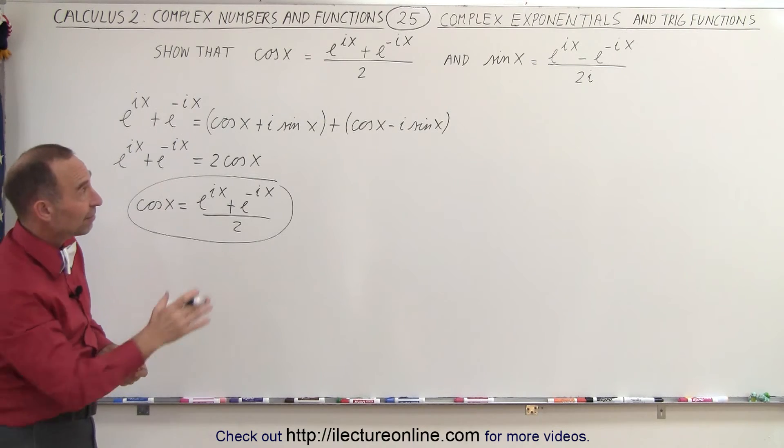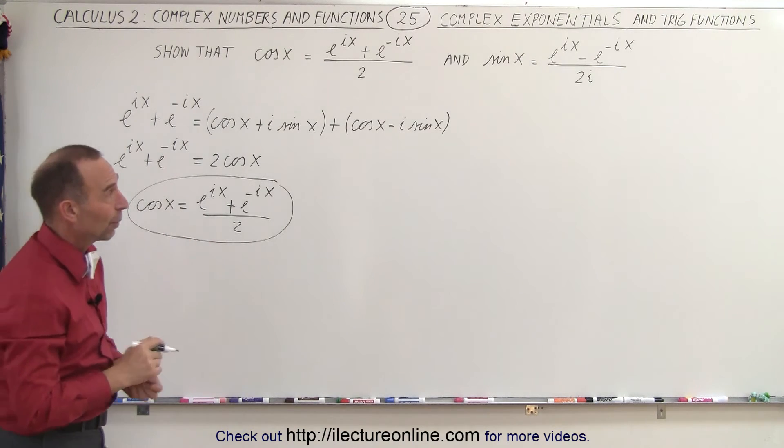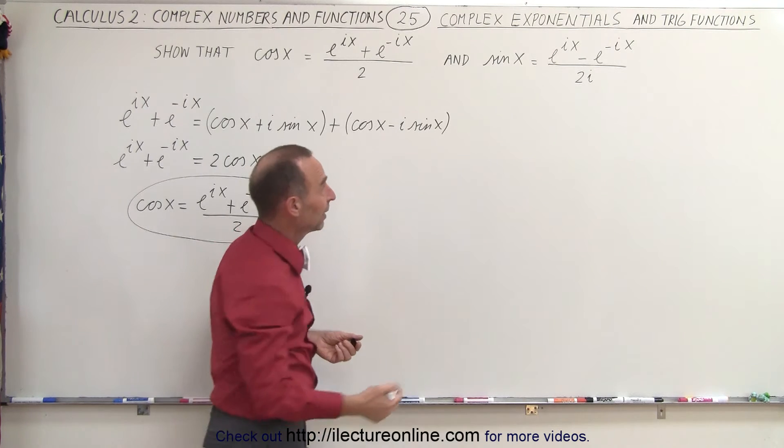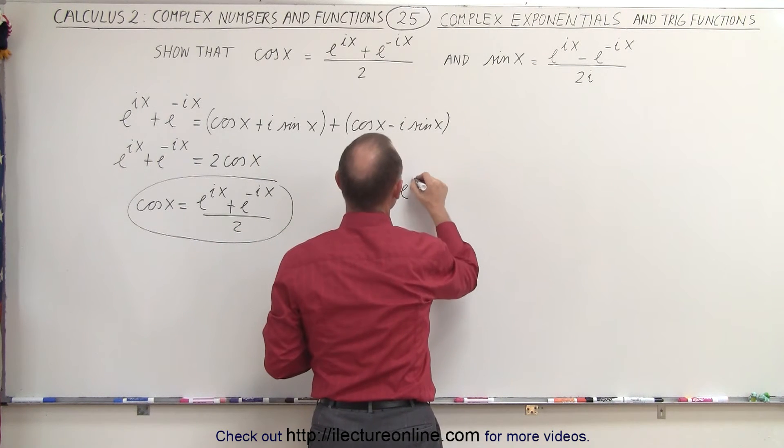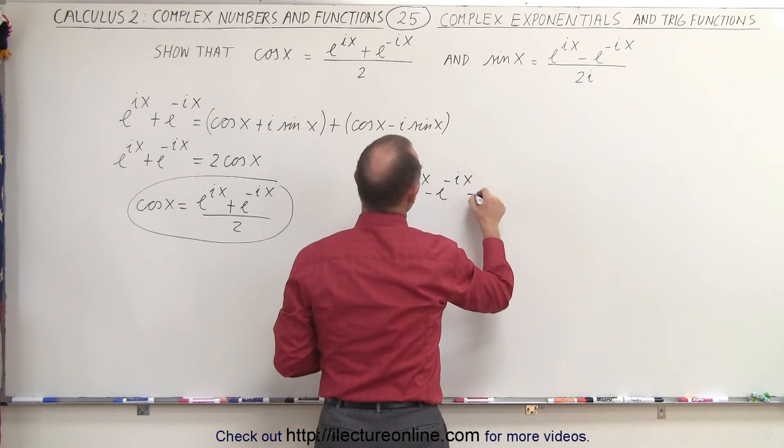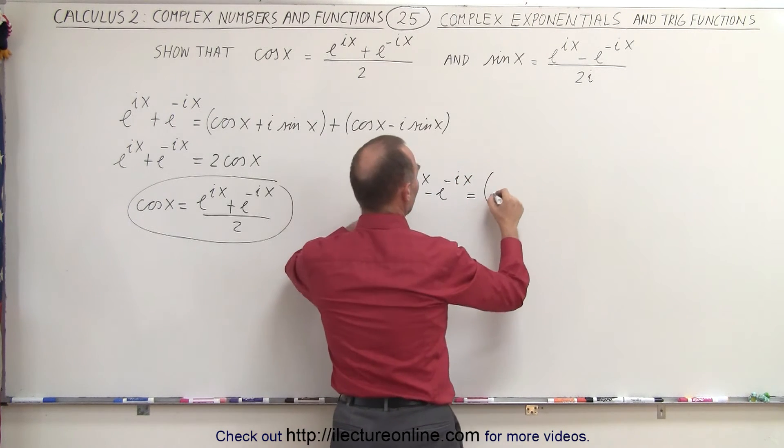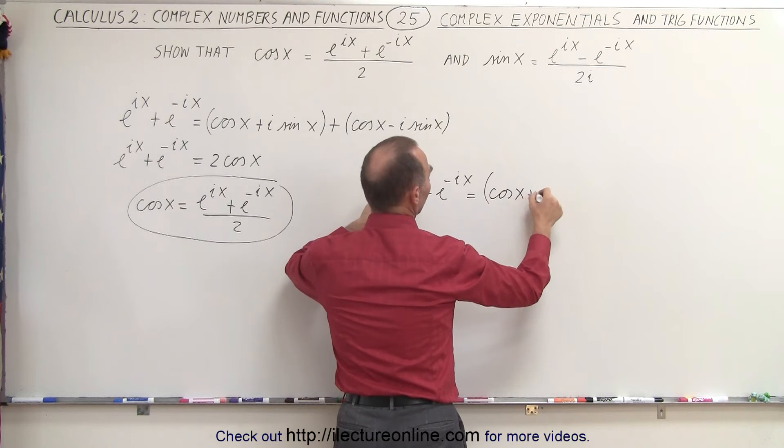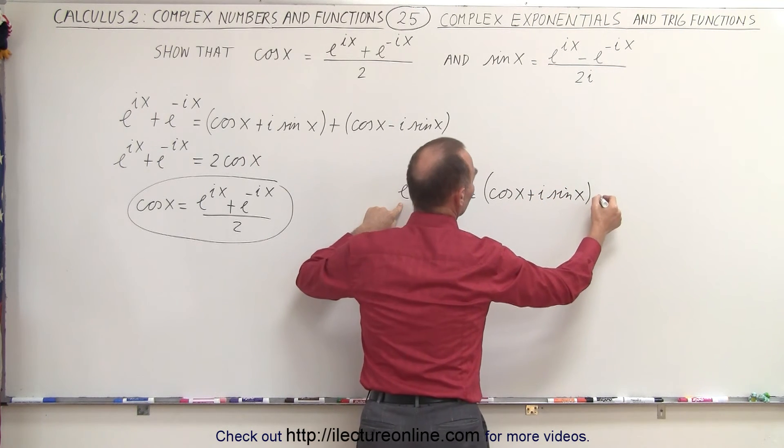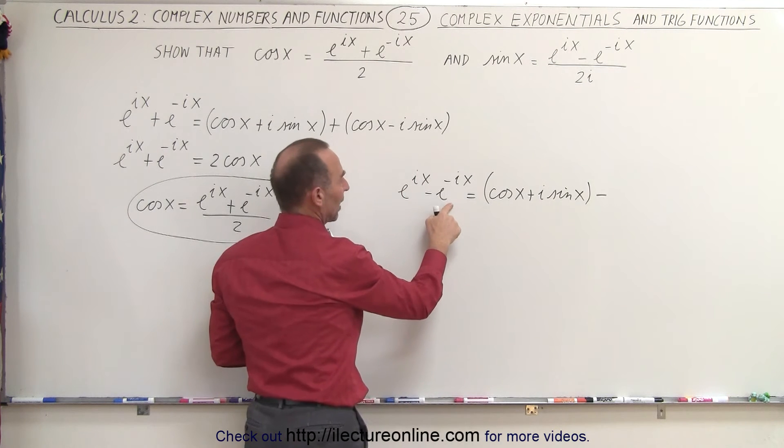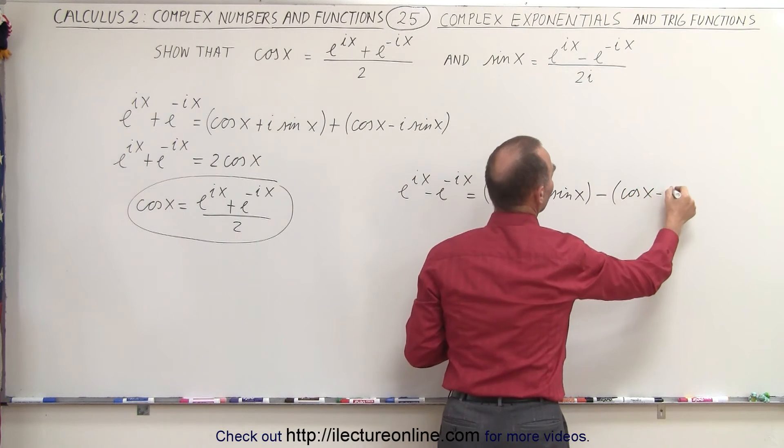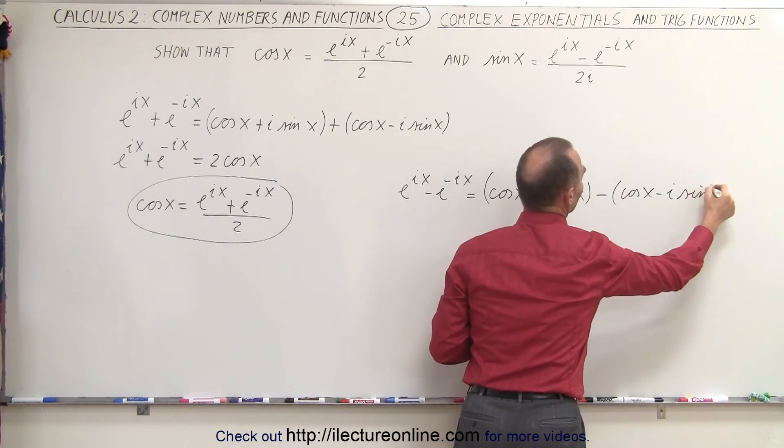And we can do the same thing for the sine of x. So what we can do is take the numerator here and expand it. Let's see what we get. We can write that e to the ix minus e to the minus ix is equal to, well, this we expand to the cosine of x plus i times the sine of x. And now we subtract from that when we expand this. And this becomes the cosine of x minus i times the sine of x.